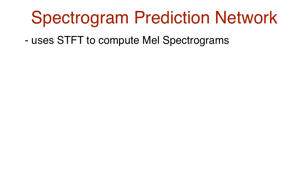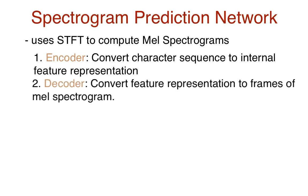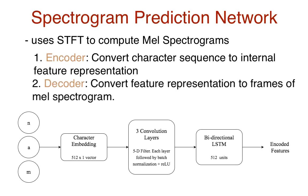Tacotron 2, like its predecessor, uses short-time Fourier transforms to compute MEL spectrograms. The network consists of an encoder to convert character sequences to an internal feature representation, and a decoder to convert these representations into frames of the spectrogram. The input is a 512-dimensional vector of character embeddings, passed through three layers of convolution using a 5x1 filter, each followed by batch normalization and a ReLU activation. These convolution layers recognize n-grams or phrases, and the result is passed into a bi-directional LSTM with 512 units to generate encoded features.